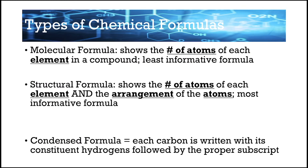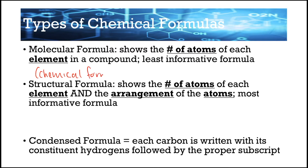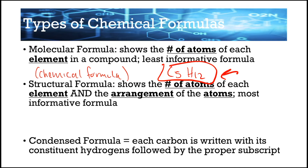Now we're going to talk about types of chemical formulas. First, the molecular formula — also called a chemical formula — shows the number of atoms of each element in a compound. This is the least informative type. For example, C₅H₁₂ is the formula for pentane, but it could also be the formula for other compounds. You can use those same five carbons and twelve hydrogens to create multiple different compounds, each with different names — so just having the formula is not enough.